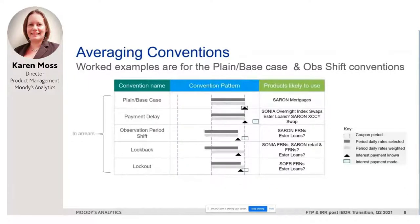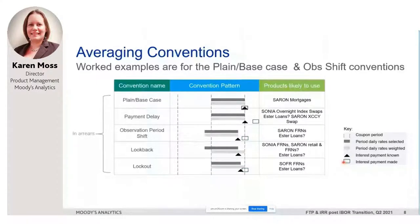These are some examples of averaging conventions which have started to become more popular for use in banking products. In the plain or base case overnight compounding convention, daily rates over the last, say, one month are compounded into a single payment paid on the last day of that month. The dotted lines show the coupon period; the dark gray box shows the period the daily rates are selected; the light gray box the period daily rates are weighted; the triangle is when the interest payment is known; and the square is when it's actually made. In the base case, the interest payment is only known on the day it's paid.